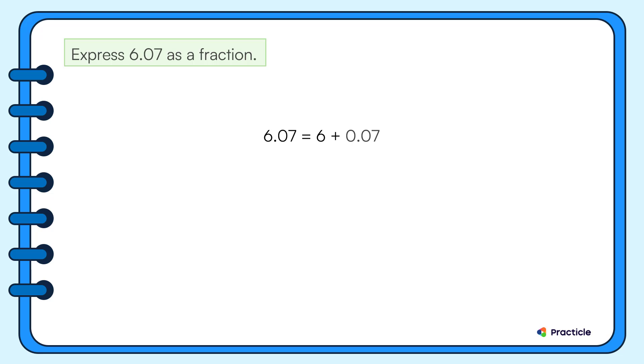6.07 is the same as 6 plus 0.07. Did you get that? The next part is easy. We'll keep the whole as it is and rewrite the decimal part as a fraction.